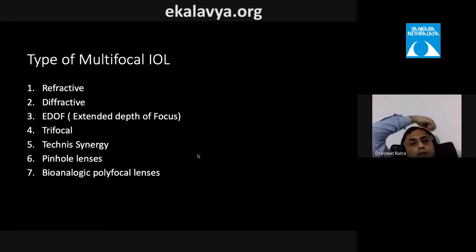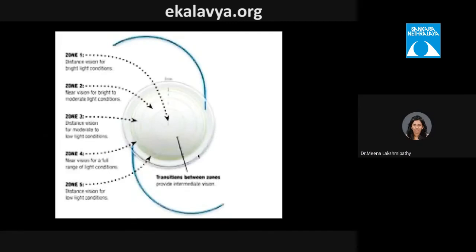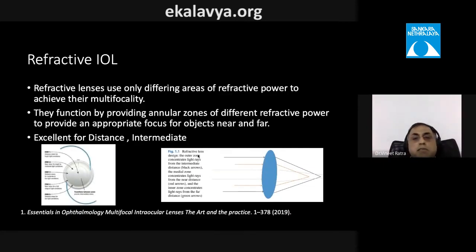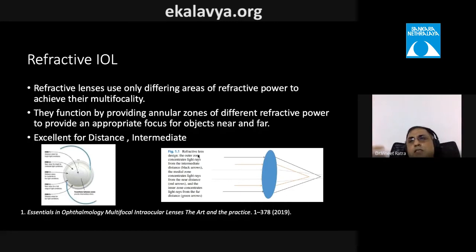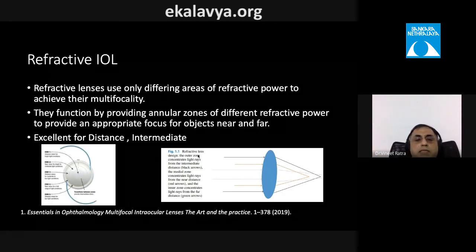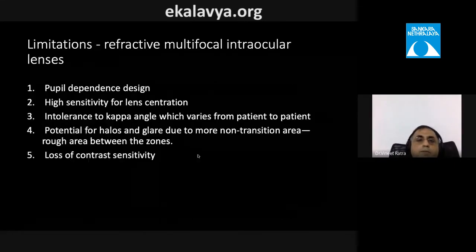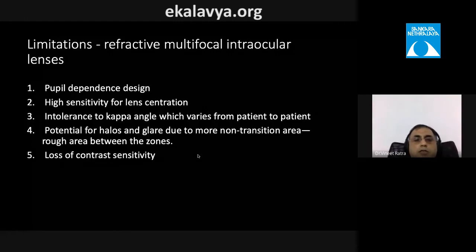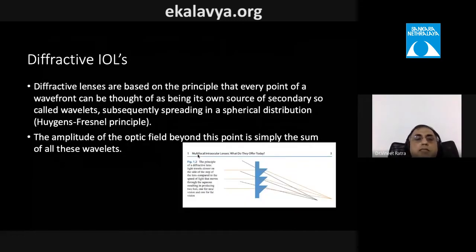Refractive multifocal IOLs use differing areas of refractive power to achieve multifocality through annular zones. The ReZoom was one of the most popular — good for distance and intermediate — but was pupil-dependent, sensitive to centration, intolerant of kappa angle variation, and associated with significant halos, glare, and contrast sensitivity loss.